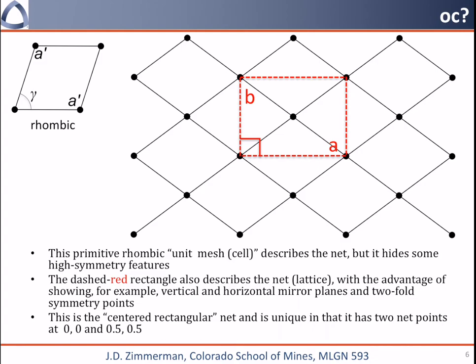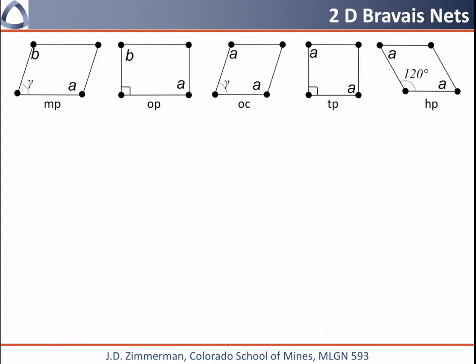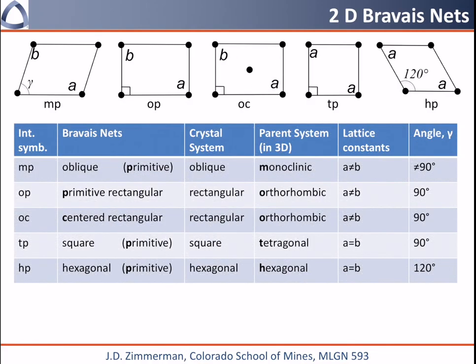In two dimensions, the centered rectangular net is unique in that it is the only Bravais net that has two net points per unit mesh. We have one point at the origin, described using fractional coordinates zero, zero, and a second lattice point at the center, described as one-half, one-half. Returning to the five two-dimensional Bravais nets, replacing the oblique lattice with the centered rectangular, we now have: oblique, primitive rectangular, centered rectangular, square, and hexagonal.